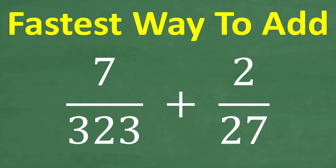Well, there is a completely different way to do this problem. Matter of fact, it is the fastest way to add these fractions. And the great thing about this particular way is that it has nothing to do with finding the LCD. Okay, but let's see how much you know about fractions anyway. So feel free to use a calculator and add these fractions. So the question is 7 over 323 plus 2 over 27.